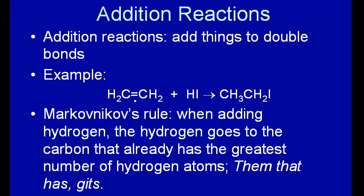Now what would happen if instead of one carbon having two hydrogens and the other carbon having two hydrogens, suppose that one carbon had one hydrogen and the other carbon had two hydrogens, where would the H and where would the I go? Well, Markovnikov's rule says that the H will go to the carbon that already has the greatest number of hydrogen atoms.